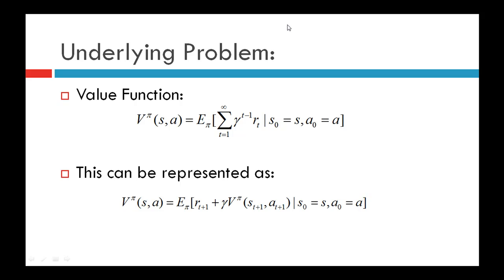This value function can also be represented in Bellman form: V^π(s, a) = E_π[R_{t+1} + γ · V^π(s_{t+1}, a_{t+1})]. This was already explained in the lectures in the reinforcement learning channel, and in case of doubt you can refer to those lectures.